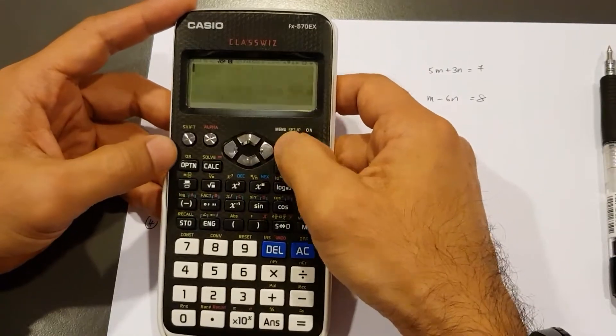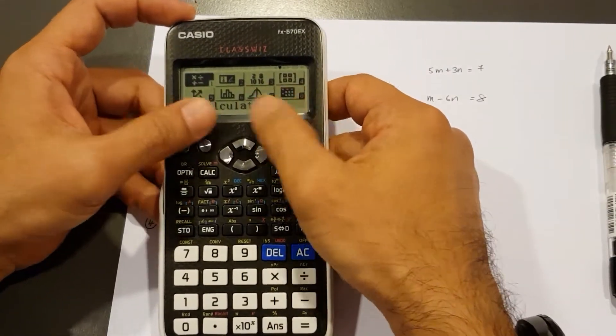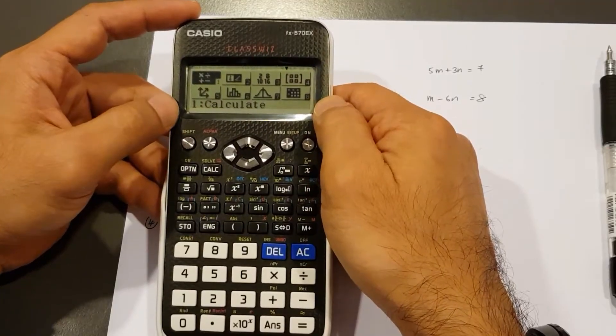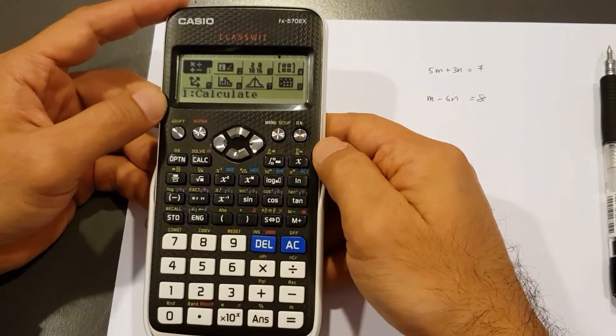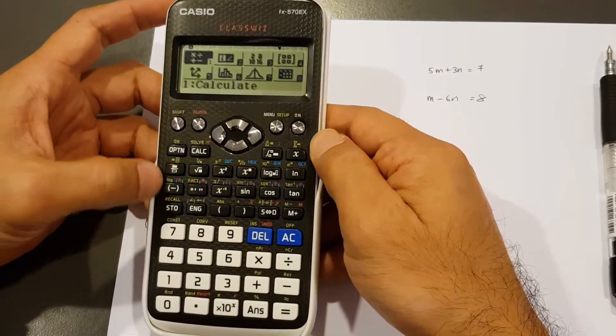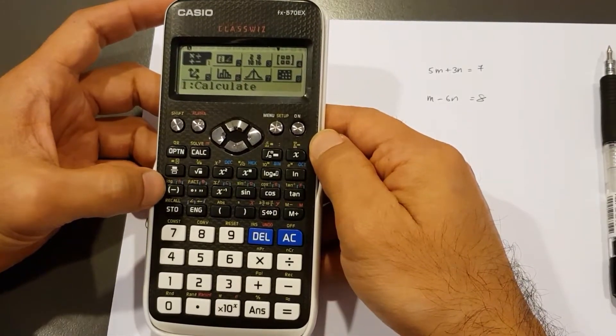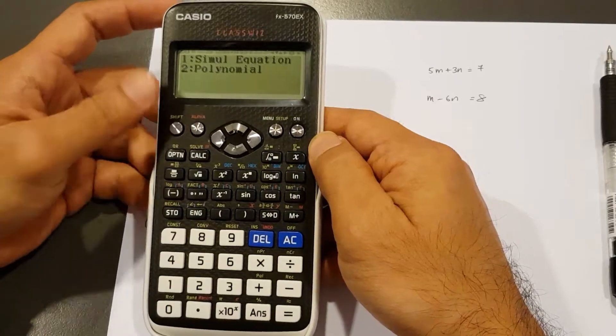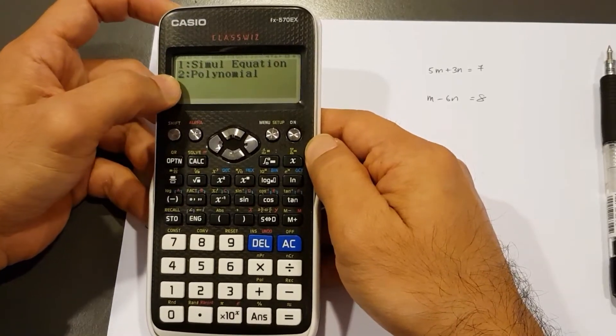So first menu, you see we've got a brand new set of icons over here. To enter into the factorization function, we press alpha, that's over here, and then A. A is over here. If you can't see, it's also the negative button. So that's alpha A and we are looking for number two, polynomial.